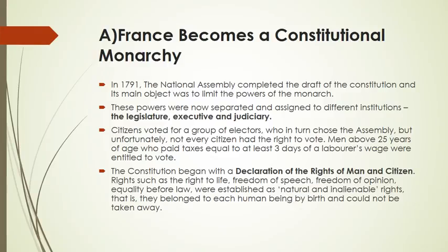When we are talking about the limitations of the powers of the monarch, we find it was joined by many people, like the nobles, out of fear. Finally, it was successful in removing the privileges which the church and the nobles enjoyed. The constitution of 1791 gave the power to make laws to the National Assembly, which was indirectly elected. All three organs — legislature, executive, and judiciary — made France a constitutional monarchy.